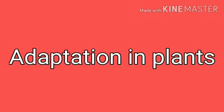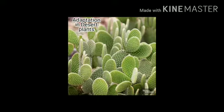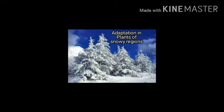Adaptation in plants means they are adapted to different weather conditions. As seen in this picture: adaptation in aquatic plants, adaptation in desert plants, adaptation in snowy regions, adaptation in forest region plants, adaptation in grass plants, and adaptation for ingestion of food in plants.